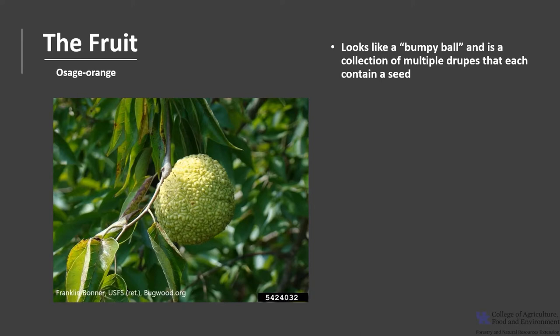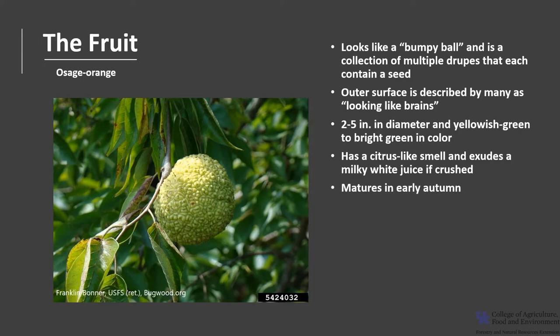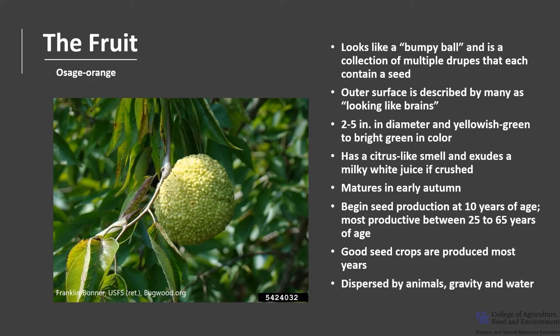The fruit is very distinctive — it looks like a bumpy ball. It is actually a compound collection of multiple drupes that each contain a seed. The outer surface is bumpy and many describe it as looking like brains. It's about two to five inches in diameter and usually yellowish green to bright green in color. It has a citrus smell and exudes a milky white juice if crushed.